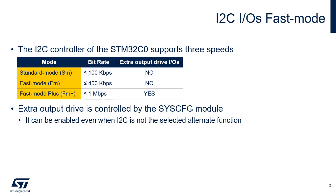The I2C controller present in the STM32C0 supports three speeds: standard mode with a maximum bit rate of 100 kbps; fast mode with a maximum bit rate of 400 kbps; and fast mode plus with a maximum bit rate of 1 megabit per second.